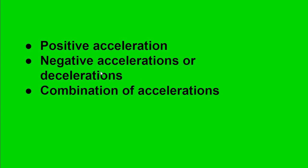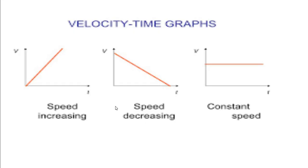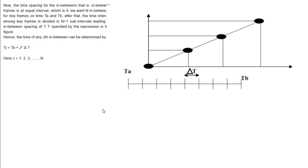Though we discussed negative accelerations, now we come to combination of acceleration. In combination of acceleration, speed is increasing and decreasing both. Let us see with this example. Here is a constant speed.